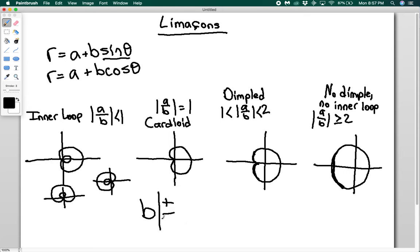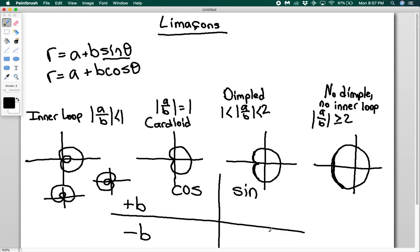So we'll make a little table here. We'll take the value of B to be either positive or negative. Actually, I'm going to make this too small, but let's draw this a little bigger. We'll do it here. So we could have positive B, we could have negative B and we can have cosine or we can have sine.